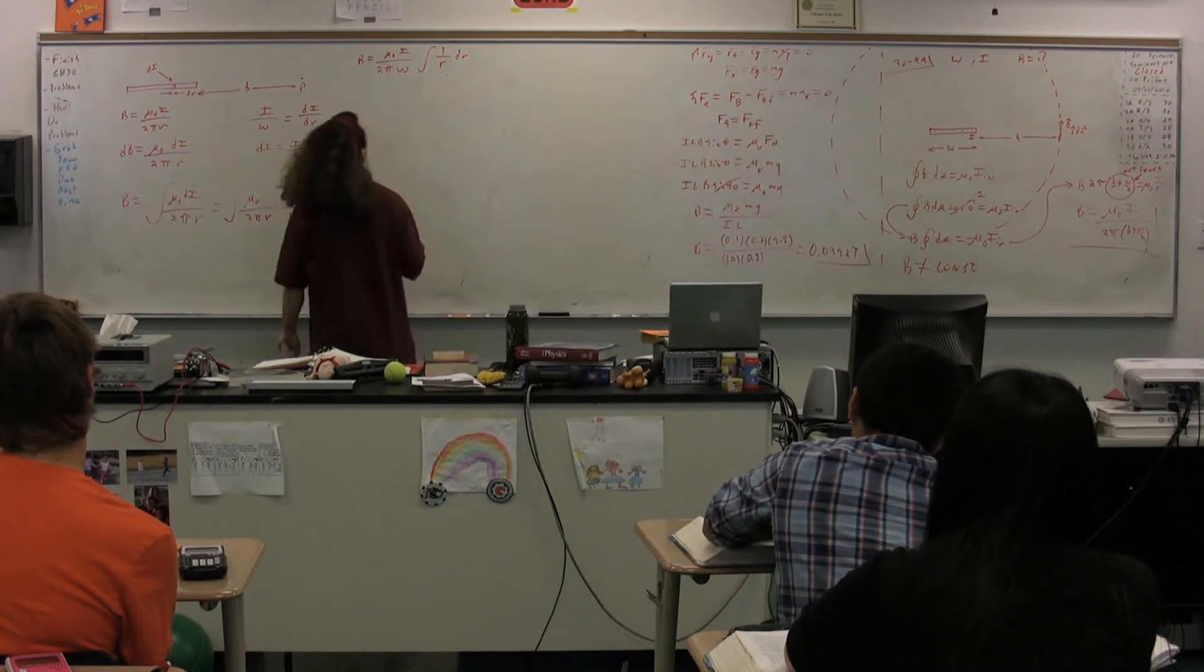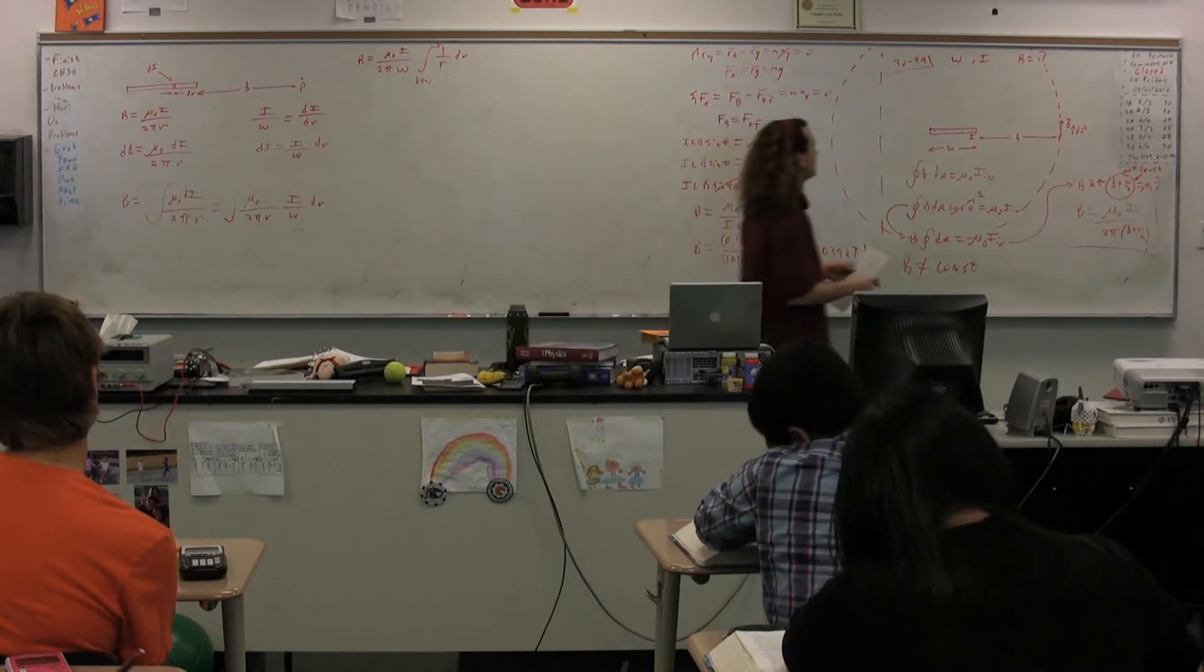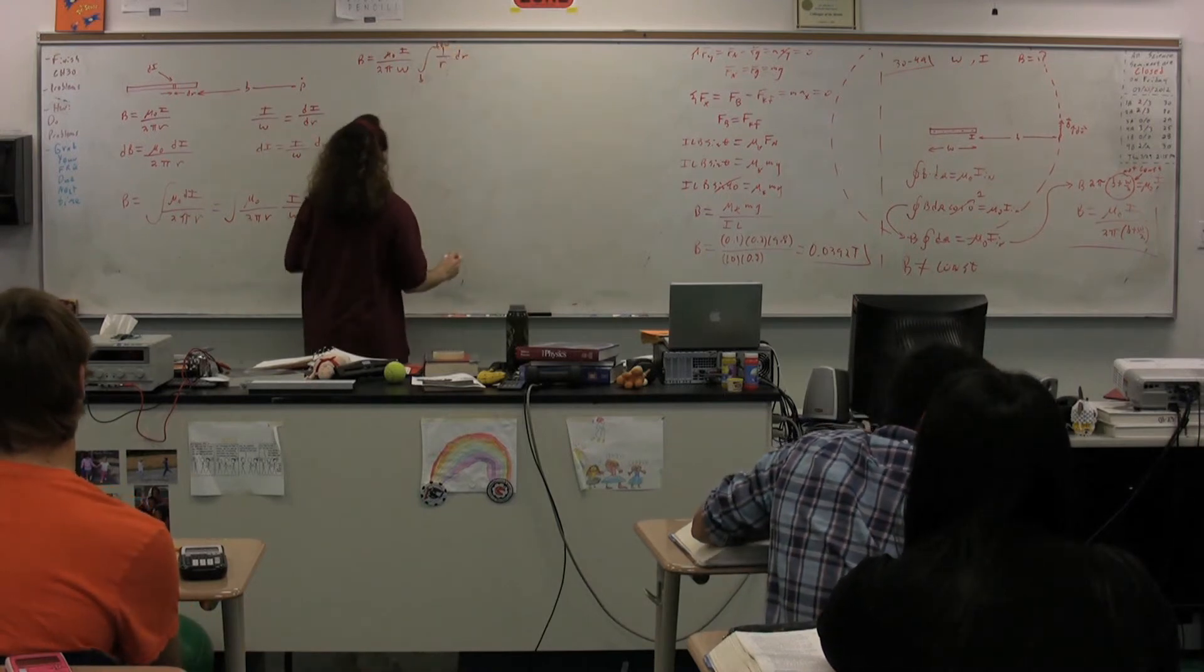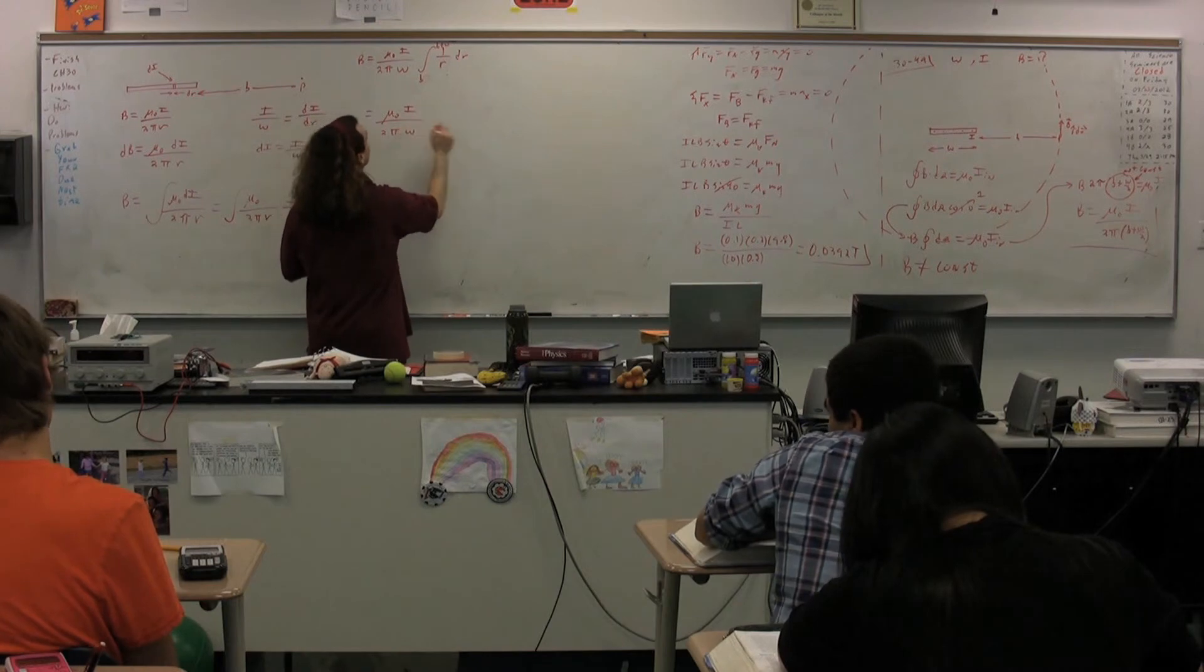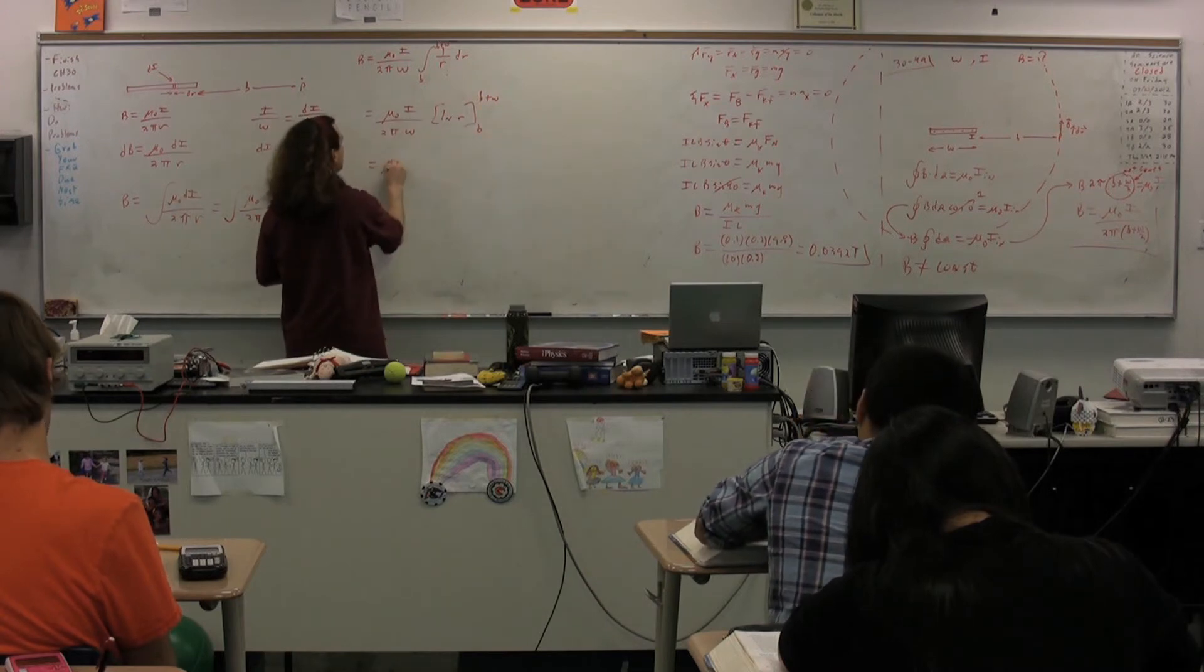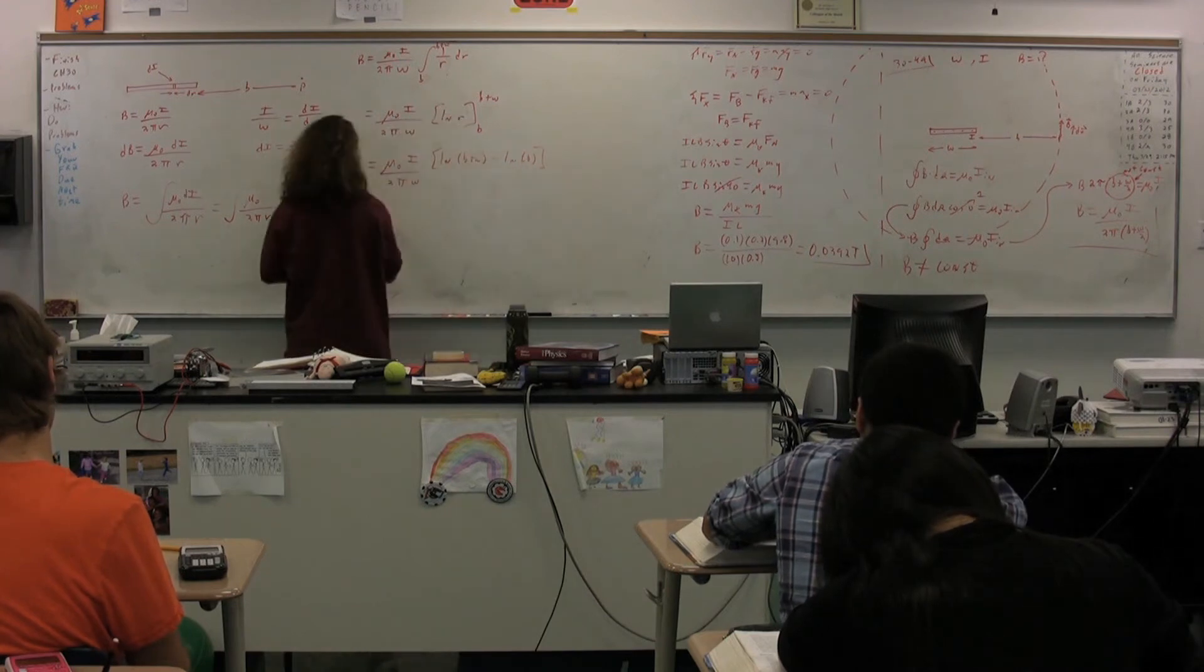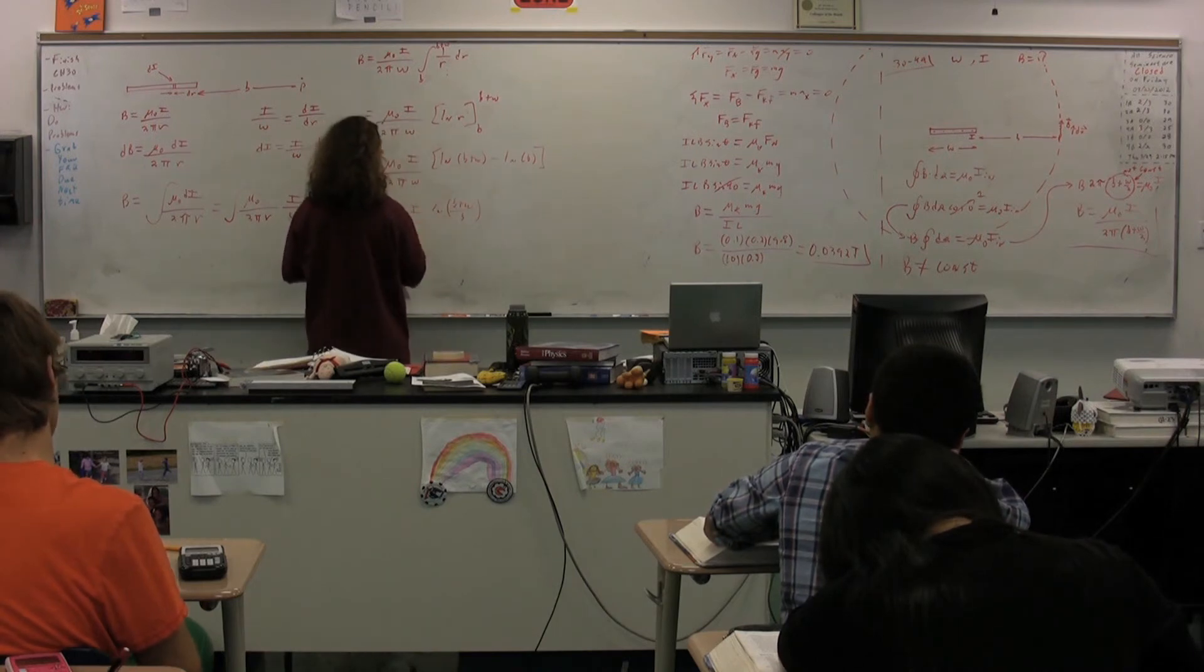Now, we don't have limits yet. So? From b plus w to b. B plus w to b. I would actually go the reverse from b to b plus w. And the integral of 1 over r? Natural log. Thank you, class. Thank you, Pat. Natural log of r from b to b plus w. So, we have mu naught times i 2 pi w natural log of b plus w minus the natural log of b. Or mu naught i times the natural log of b plus w over b, all of this divided by 2 pi w.